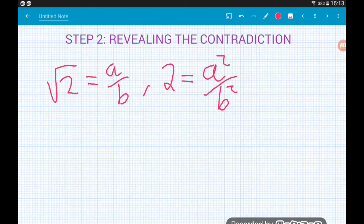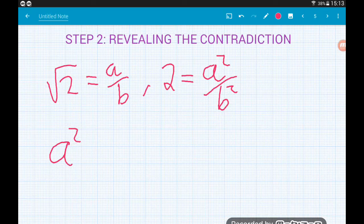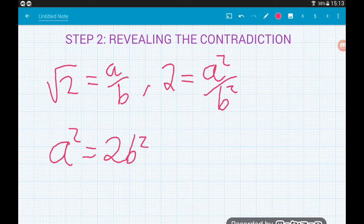Okay, and if we multiply by the b squared, we could get that a squared is equal to 2b squared.